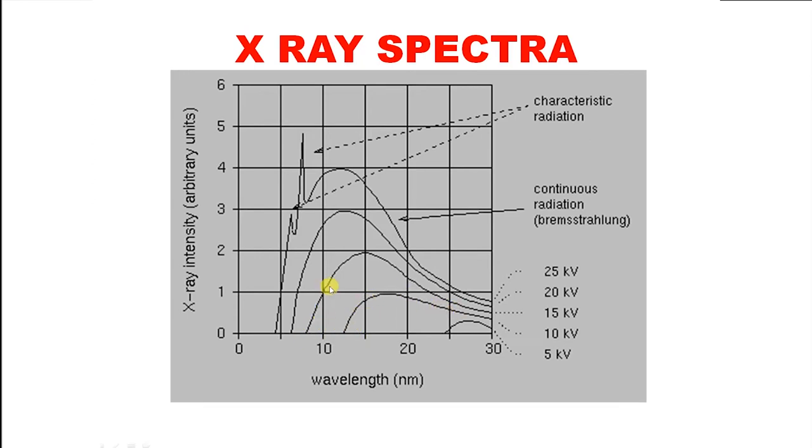In all earlier cases, the graph was smooth, continuously varying. Whereas for this very high potential, apart from this smooth curve, there are some peaks. This is because of some different phenomenon and we particularly call this as characteristic radiations. Now we will discuss why there are different types of graphs for different accelerating potentials.